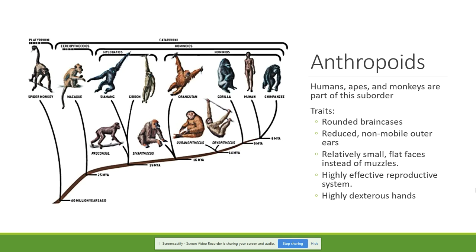In the group of the anthropoids we are going to have humans, apes, and monkeys. They share several traits. The first one is rounded brain cases — if you touch the back of your head, you'll feel that you have a round brain case.